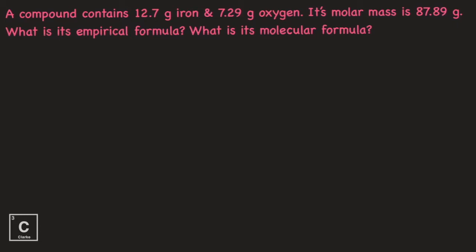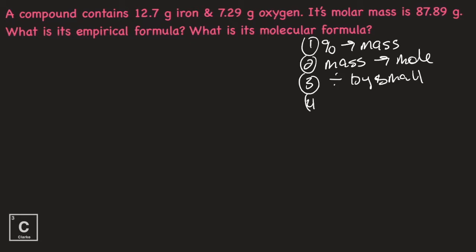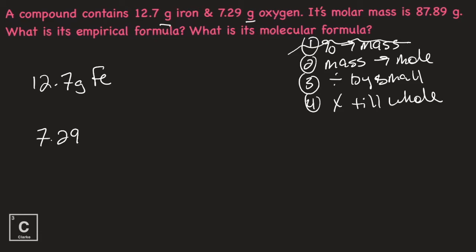If you're in my class, this is number three. I noticed it was not on my answer key, so I wanted to make sure and make that available to you. A compound contains 12.7 grams of iron and 7.29 grams of oxygen. Its molar mass is 87.89 grams. What is its empirical formula and what is its molecular formula? Let's remember the steps — I like these steps because they make a little rhyme. Step one: percent to mass. Step two: mass to mole. Step three: divide by small. Step four: multiply till whole. Now, this problem starts with grams, so we don't need step one. We are already at mass, and remember, that first step really isn't a step anyway. So we're going to start with our givens: 12.7 grams of iron and 7.29 grams of oxygen.